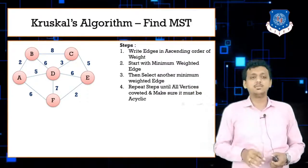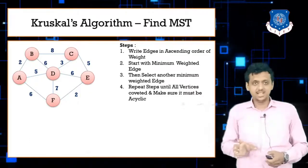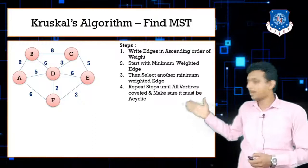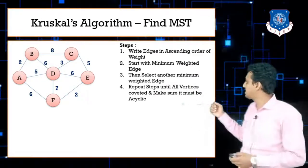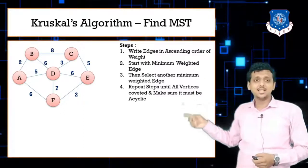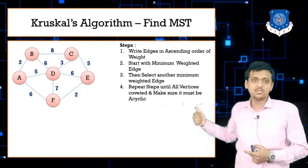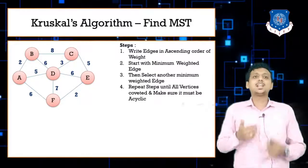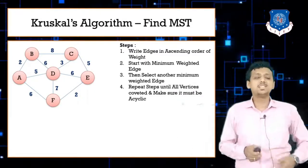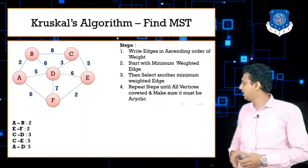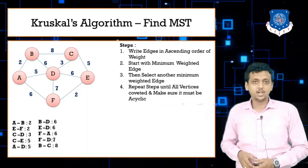Looking at the graph, the edge with minimum weight is AB, which contains weight 2. Arranging edges in ascending order: AB (2), FE (2), CD (3), CE (5), AD (5), then BD, DE, and AF all containing weight 6, followed by DF (7), and finally BC (8). All edges are now sorted in ascending order.